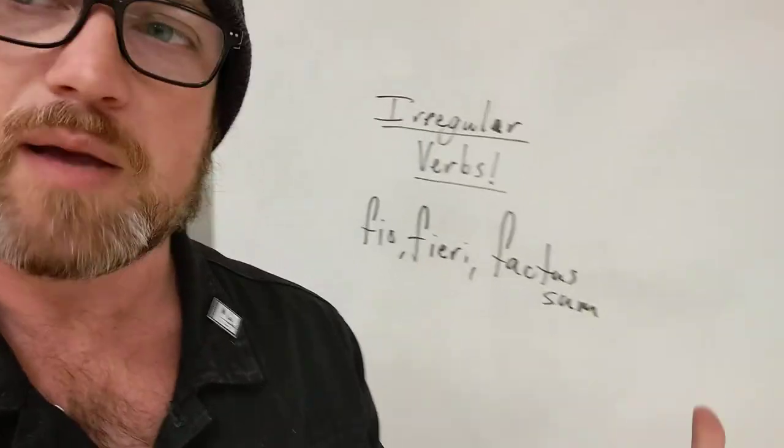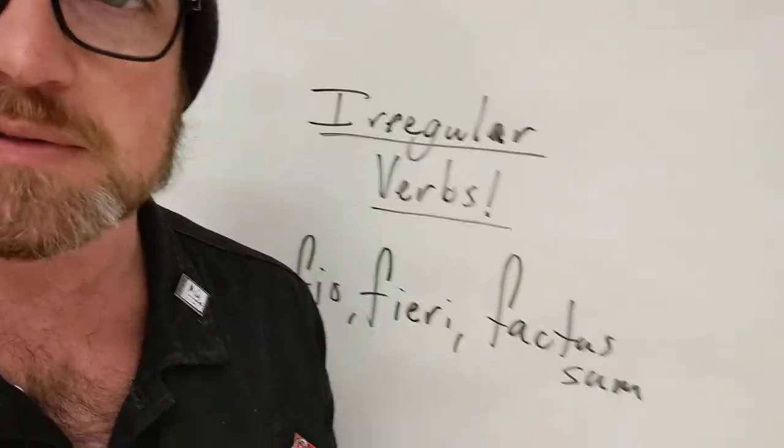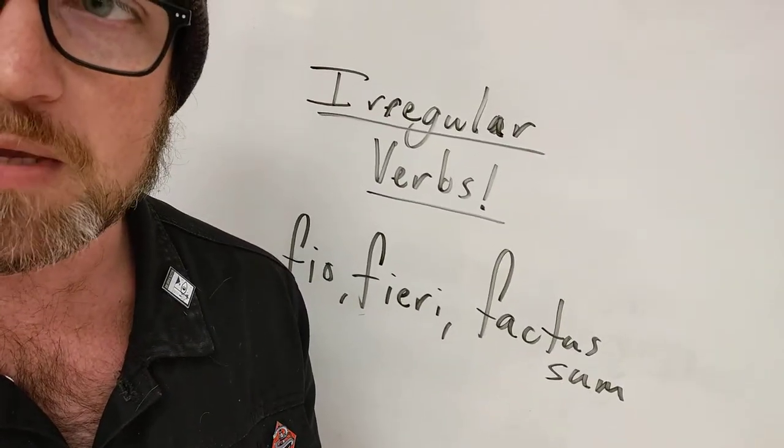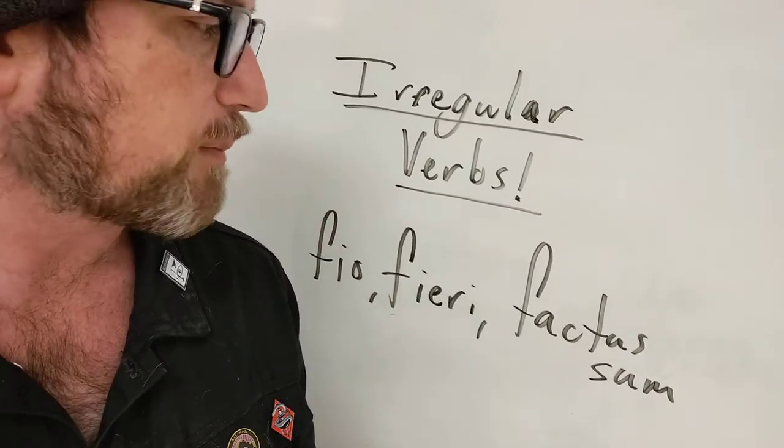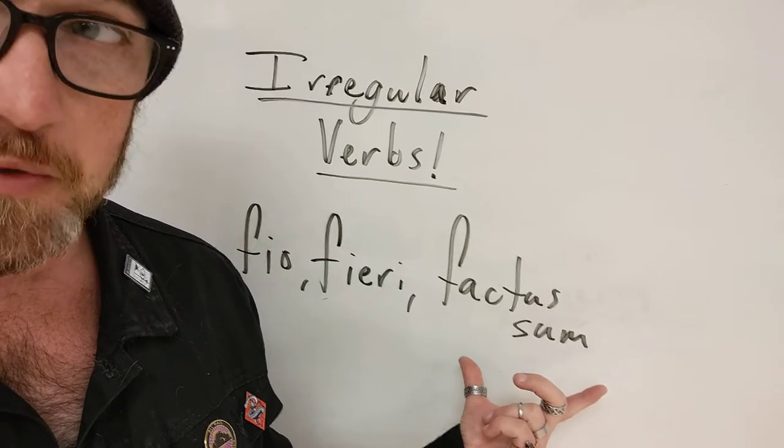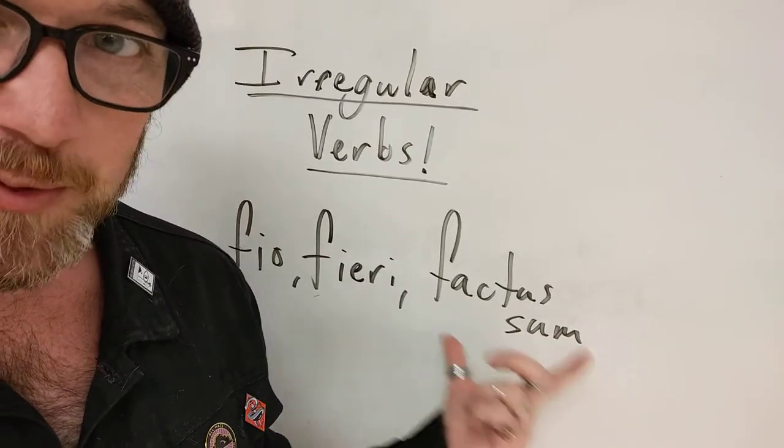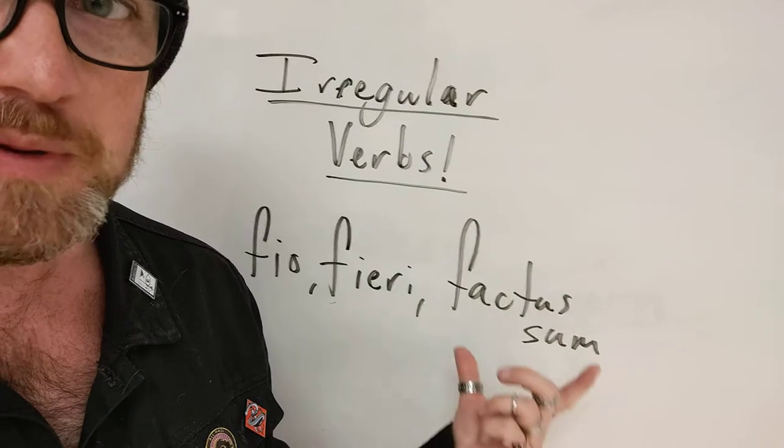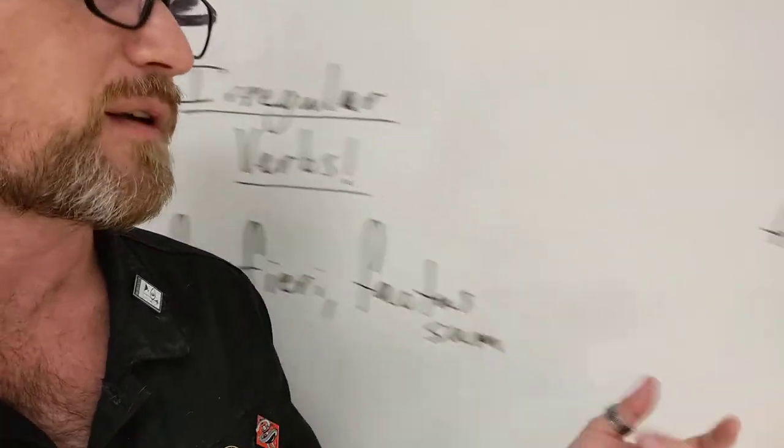Why am I only going to show you those three? Well, because if it's in the perfect system and you go to the perfect stem, it's no longer irregular. It looks passive and is passive because you're using factus sum. You're literally using what you would have used from facio to make a perfect passive anyway.